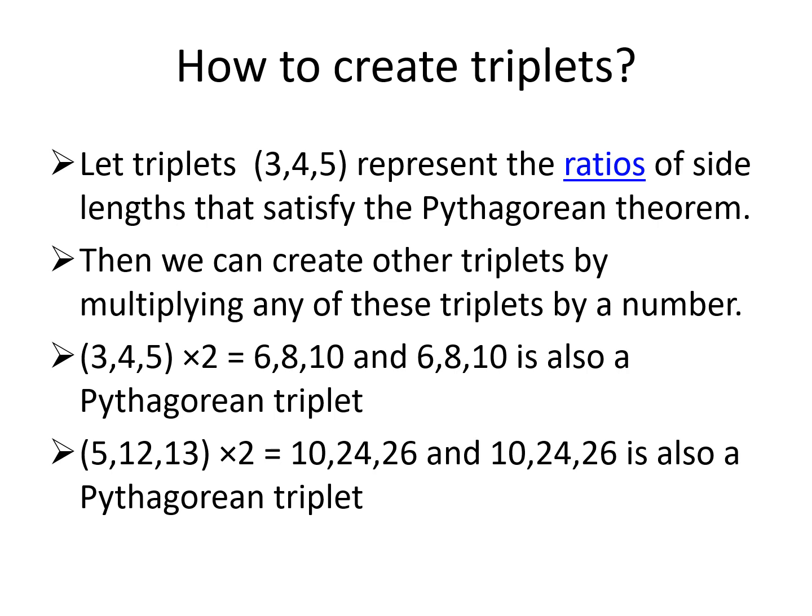Similarly, if (5, 12, 13) is one of the triplets, multiplying by 2 we will get (10, 24, 26) which is also a Pythagorean triplet. By this way you can find as many triplets as you want. I hope you all like the video. Thank you so much for watching.